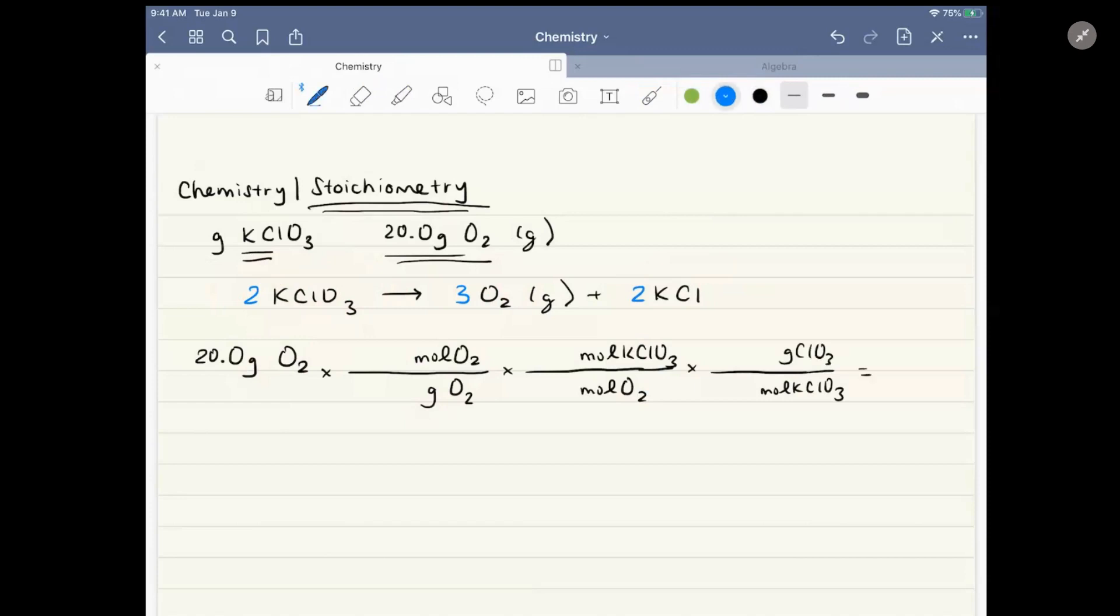The next step would be to fill in what we know. So here we can get this from the molar mass of oxygen. This is from our balanced equation above. And this is also from the molar mass on the periodic table. So I'd encourage you to pause the video here and see if you can figure out what goes in these spaces.